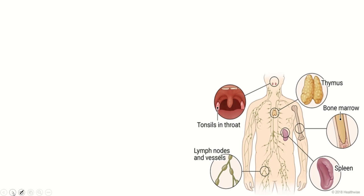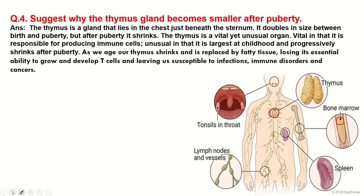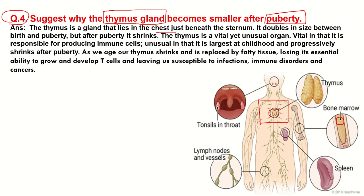Here you can see the bone marrow and the thymus gland. The main question we are targeting is: why does the thymus gland become smaller after puberty? The thymus is a gland that lies in the chest, beneath the sternum. It is at its largest between birth and puberty, and after puberty it shrinks.